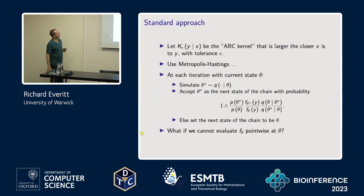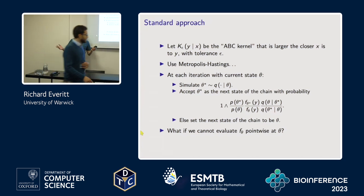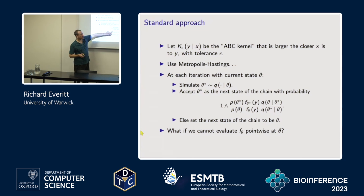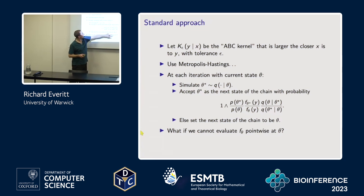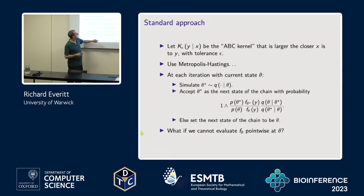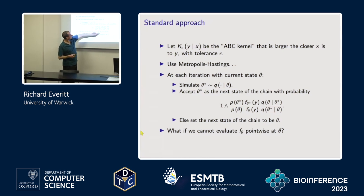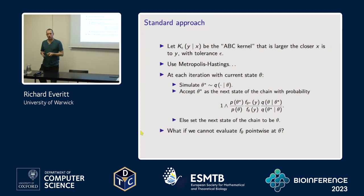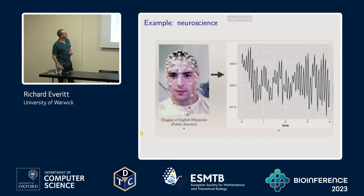So if we've got such a model, then of course our standard approach might be something like Metropolis-Hastings. We draw a theta, we look at the acceptance probability. We're going to propose a theta and we look at evaluating the prior and the likelihood to see whether we accept the new point.